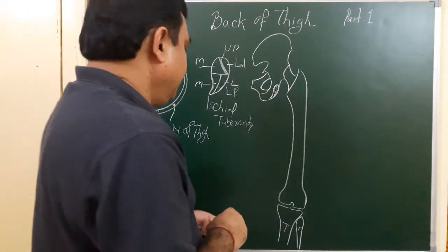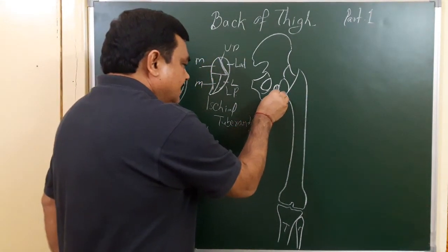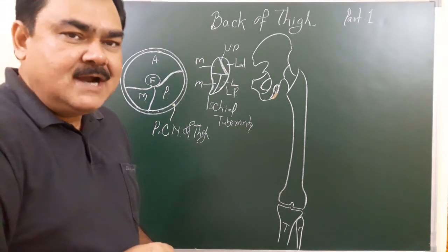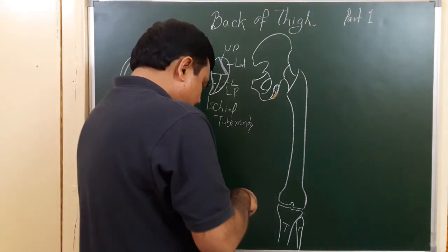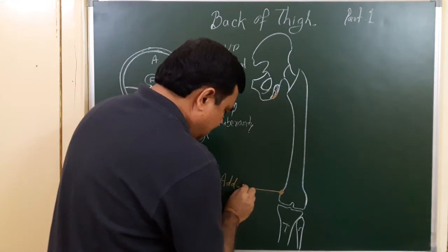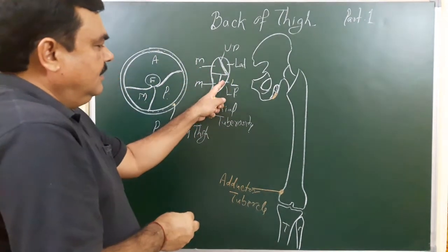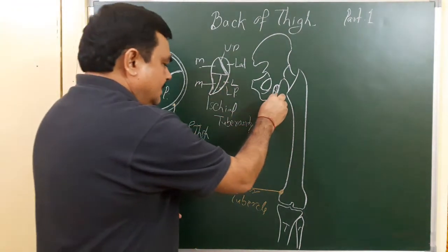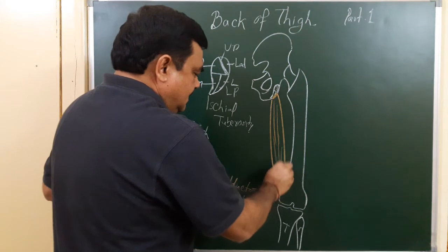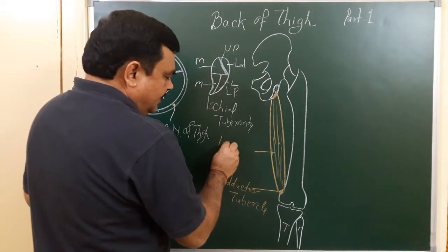Structures attached to the ischial tuberosity form the hamstring muscles. Muscles attached here include the hamstring muscles and adductor magnus. Adductor magnus has two parts: a hamstring part and an adductor part. From the lateral lower part, the ischial part of adductor magnus takes origin.